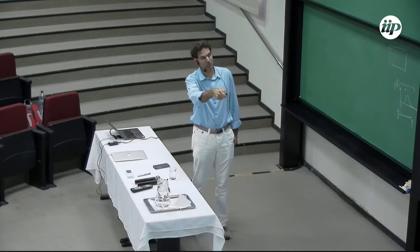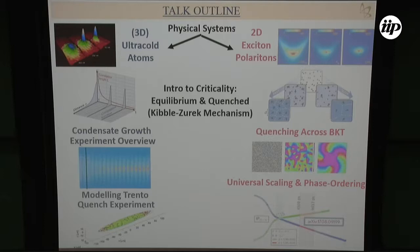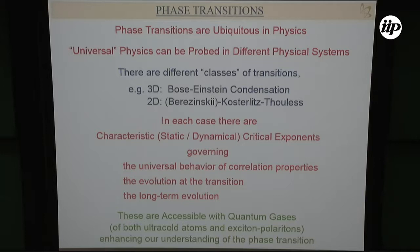They're driven dissipative systems and they're 2D. The question is what are the similar features in a two-dimensional system. Phase transitions happen everywhere and there are different classes of transitions — different universality classes, as we already heard. What happens at the transition is given by certain critical exponents: a static exponent governing equilibrium physics and a dynamical critical exponent.